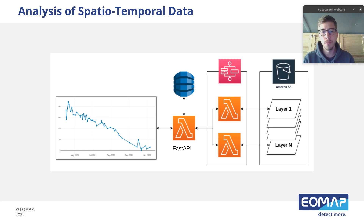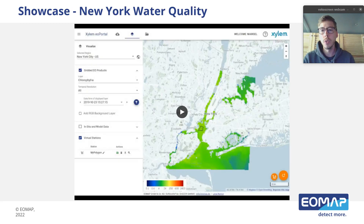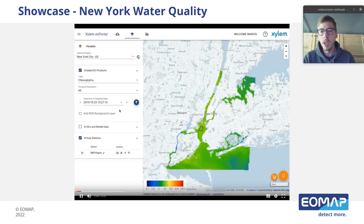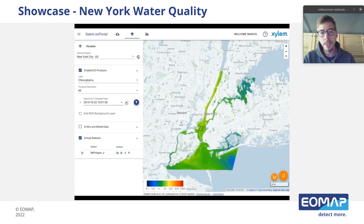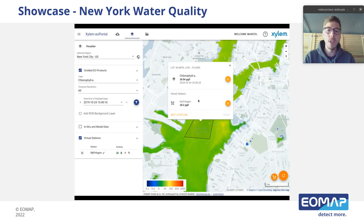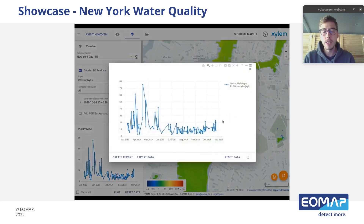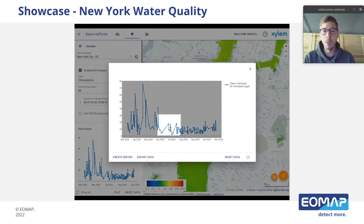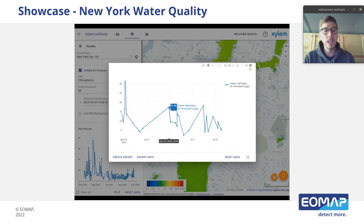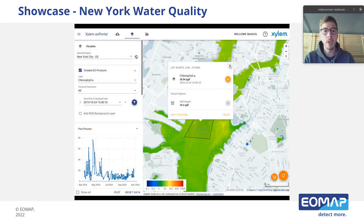Now I would like to give you a little showcase. We developed a frontend which is connected to our Rustless backend. Here you can see chlorophyll data for the New York Bay — the visualization is very fast. You can see the user-defined area: you can click on it and create a time series for it. It takes under one second to analyze 300 to 400 layers, which makes it very interactive for our clients to play with the data and gain more insight.